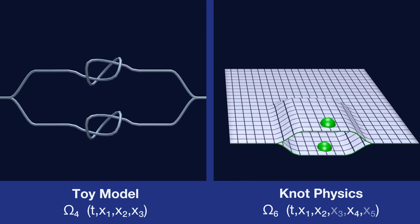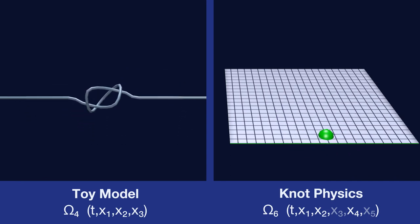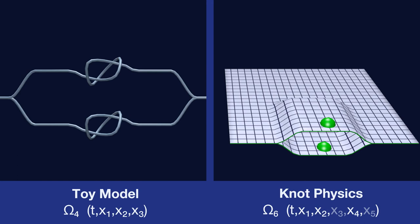Those knots would be distributed over the spacetime manifold according to some distribution, and we will see how the properties of that distribution of knots corresponds to the quantum properties of the particle.